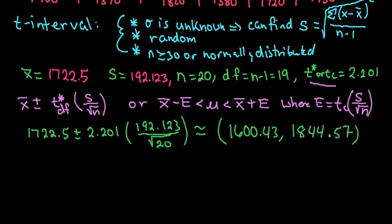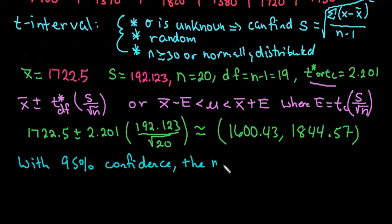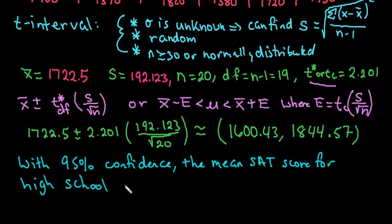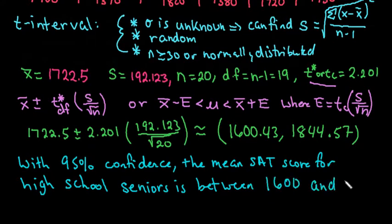Remember, it's always important to interpret it in context. The interpretation is that we can say with 95% confidence, the mean SAT score for high school seniors is between 1600 and 1845. The only reason I rounded was because most likely they're going to round it, they're not going to give it as a decimal. You can leave the decimals, it just depends on the situation.